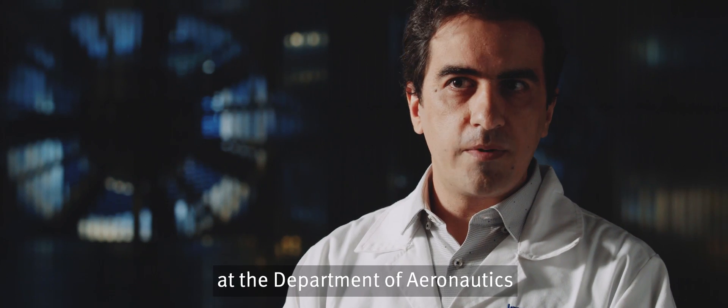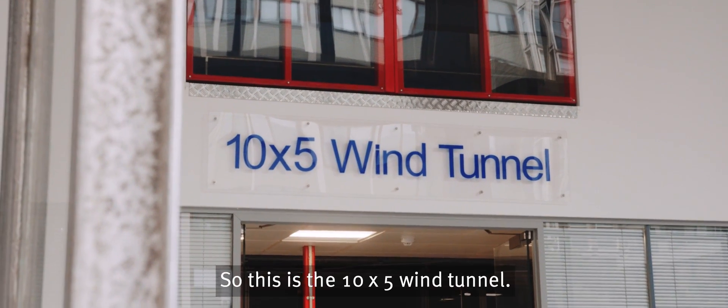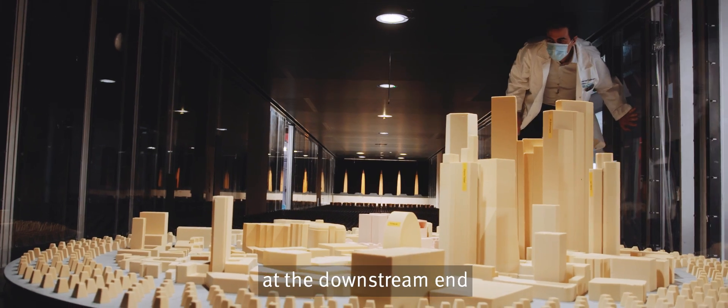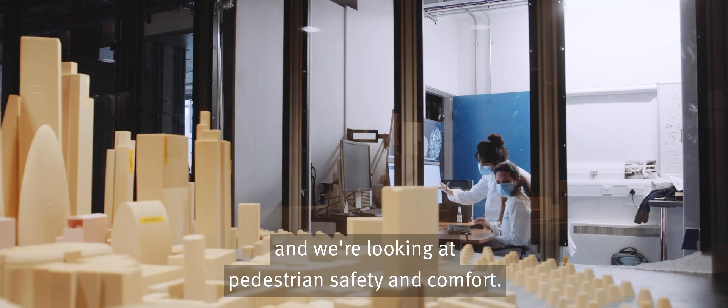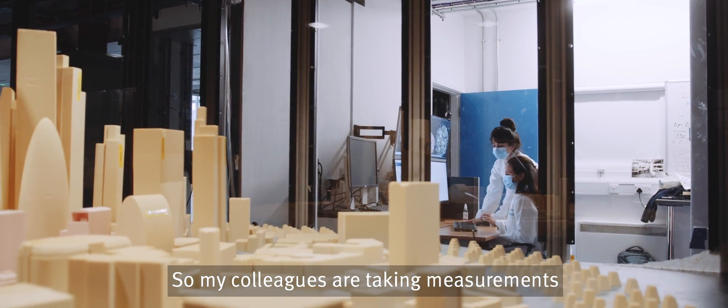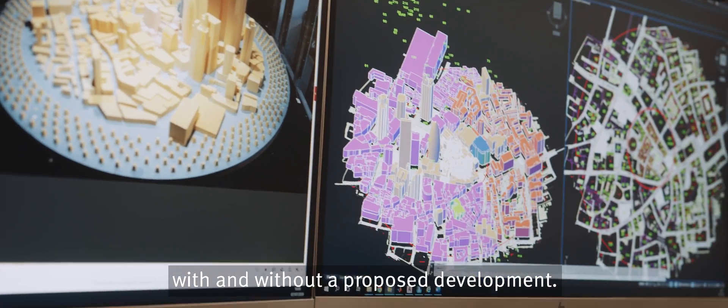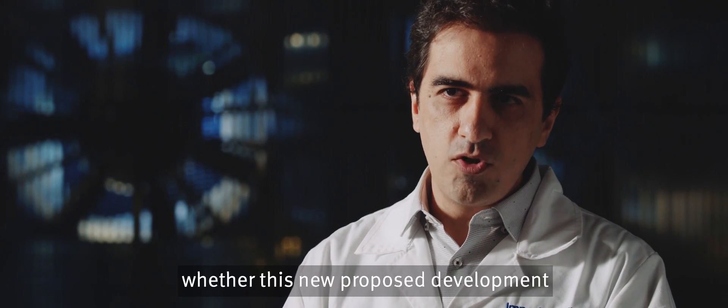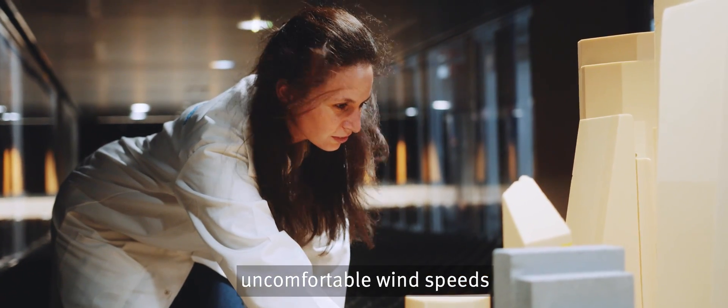So here at Imperial, at the Department of Aeronautics, we've got a number of experimental facilities. This is the 10 by 5 wind tunnel. In the lower section, at the downstream end, we've got part of the City of London and we're looking at pedestrian safety and comfort. So my colleagues are taking measurements around the streets, with and without a proposed development. And we are looking at whether this new proposed development causes dangerous wind speeds, uncomfortable wind speeds, at street level.